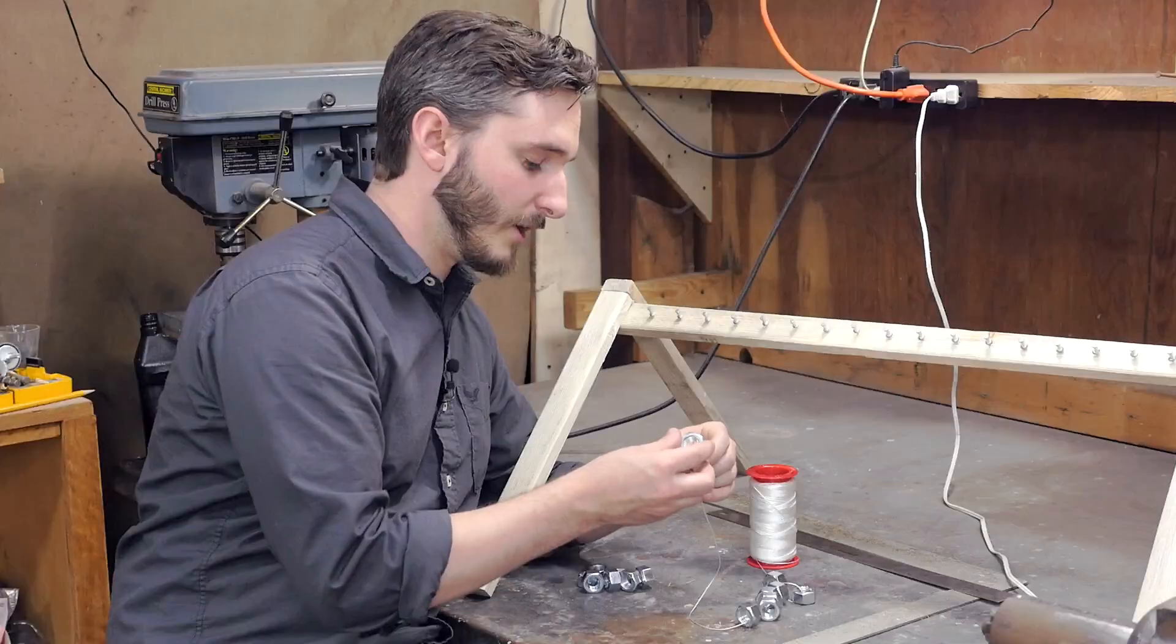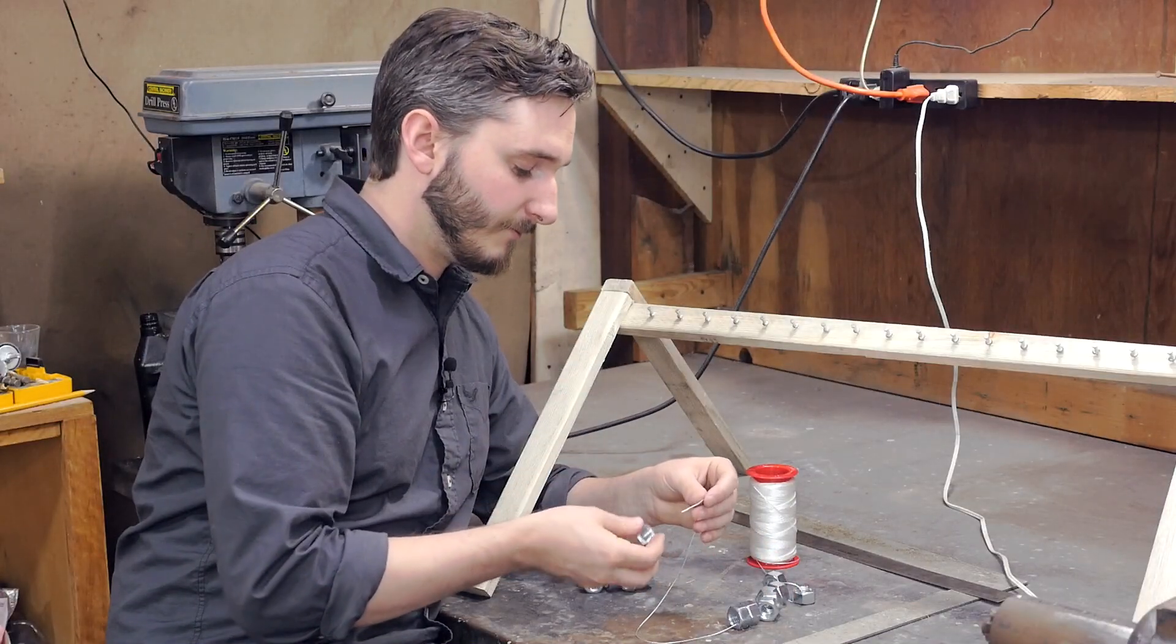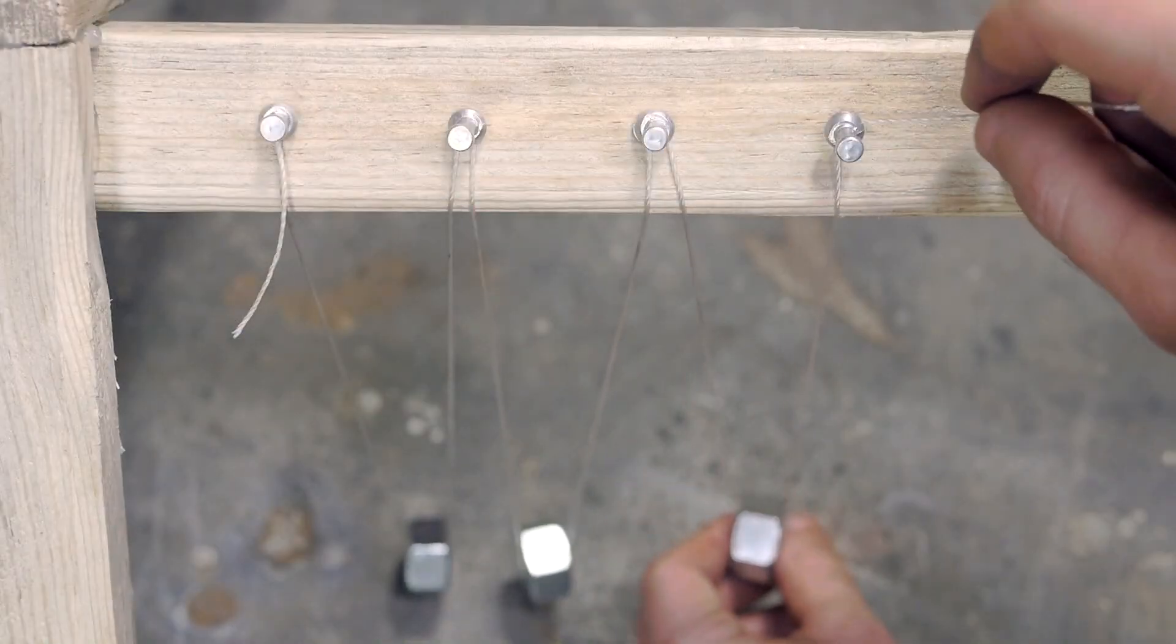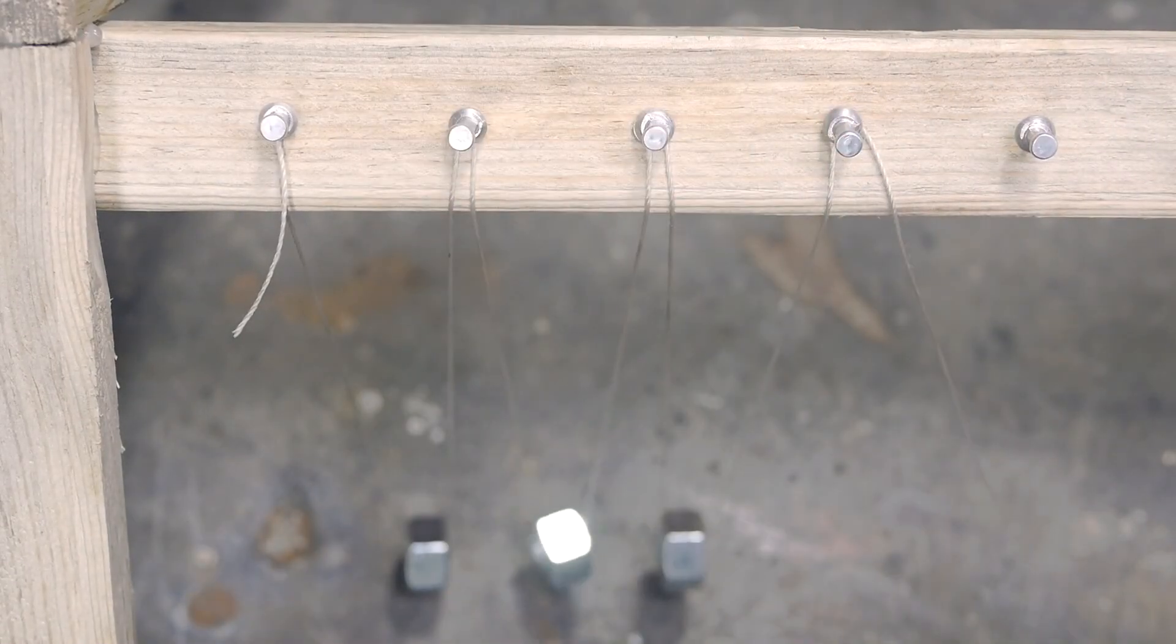The pendulums can easily be hung in the array by first feeding them onto a length of string. And I chose 30 pound kite string because it's thin and very strong. Each nut can be hung from the frame by twisting the string around the push pins and pressing the pin tightly to secure the string in place.